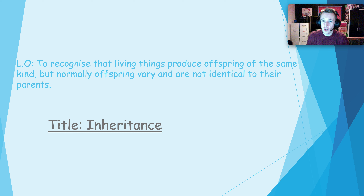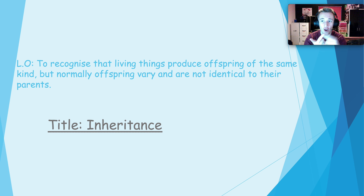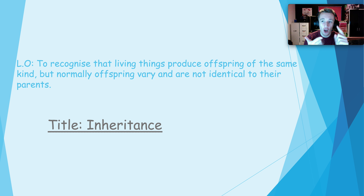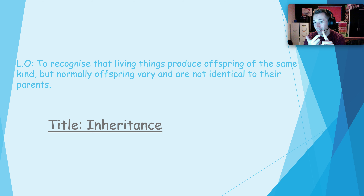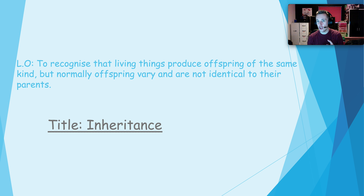We're going to be carrying on with science and we're going to be looking at inheritance today. Now in science so far we've looked at adaptation — that is where you adapt to your environment, you change your features to adapt. Over thousands of years adaptation leads to evolution, that's where basically one particular offspring has an adaptation that is advantageous, i.e. it's good.